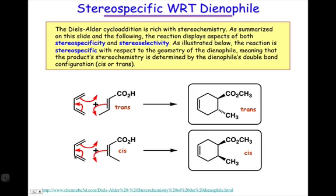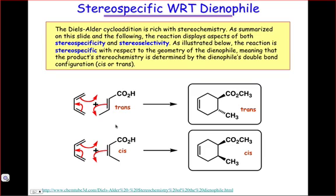The reaction is stereospecific with respect to the dienophile. That means that if the dienophile is trans in the starting material, as in this top case, then the substituents off of the carbons that used to belong to the dienophile will be trans in the cyclohexene product. Similarly, if the substituents are cis in the starting material, as in this bottom case, then the substituents will end up cis in the product.